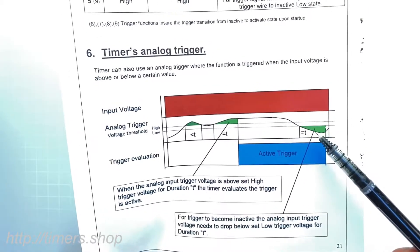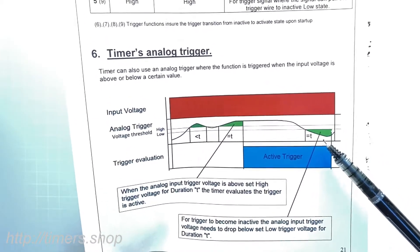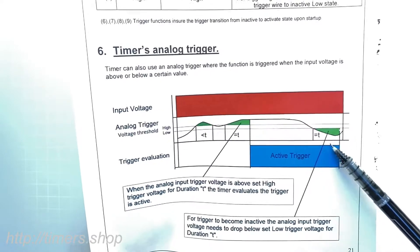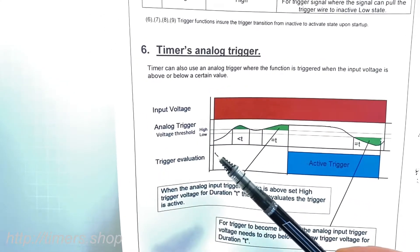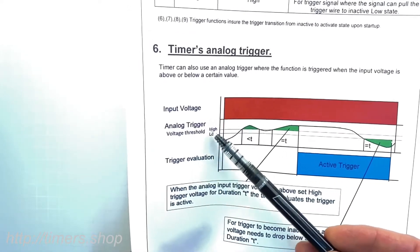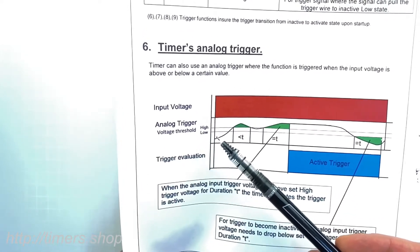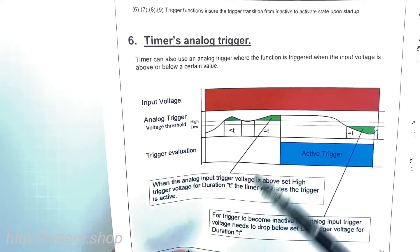When it drops below, let's say 13 volts, it will be defined as an inactive trigger. So the new configuration has high and low levels and the duration in seconds.